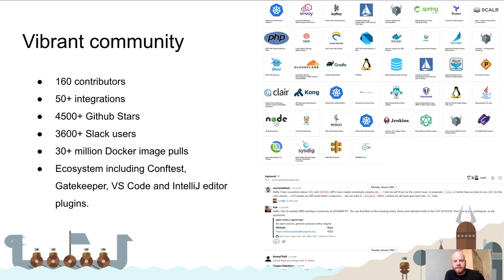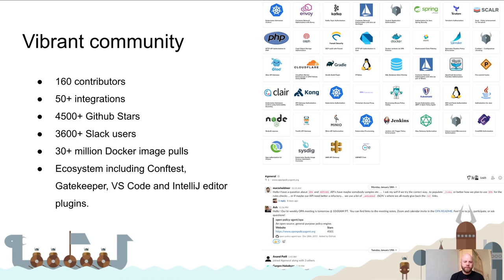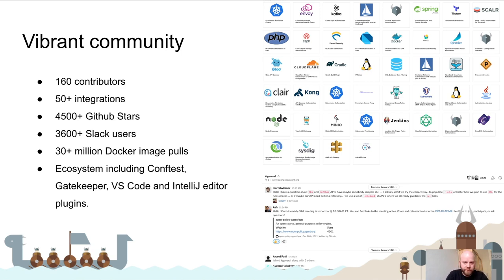OPA is a vibrant open source community — over 5,000 GitHub stars and over 4,000 Slack users. Not only do we have the Open Policy Agent project proper, but there are many interesting projects beneath it, such as Conftest for testing and config validation, with policies on configuration files.